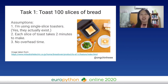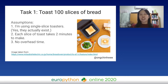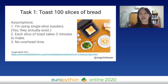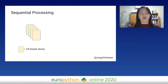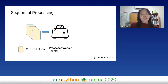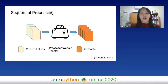Task one: I want to toast 100 slices of bread. Assumptions: I'm using a single-slice toaster; each slice takes two minutes to make; and there is no overhead time — though in reality there always will be. What we're used to is sequential processing, where we do things in sequence. With 100 slices of bread, I feed them one by one into the toaster — which is the processor — and get 100 slices of toast. This whole execution will take me 200 minutes.